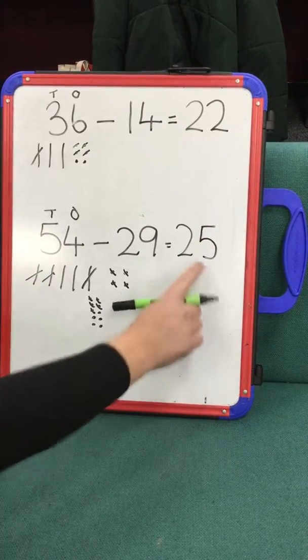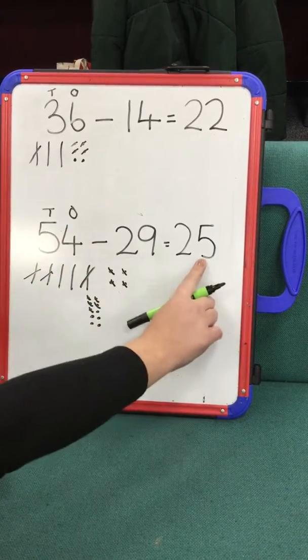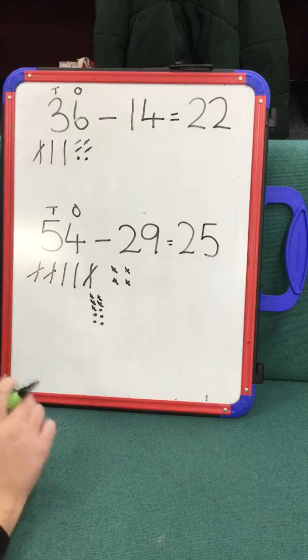And there's your answer. Reinforcing to the child, I started off with 54 as the greatest number. My answer is always going to be less than the number I started with.